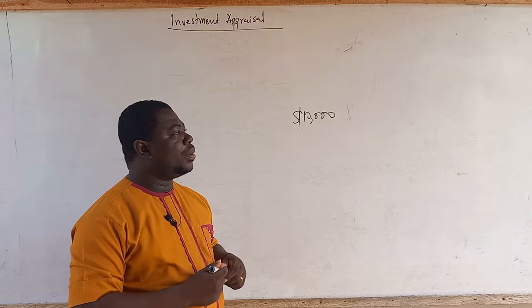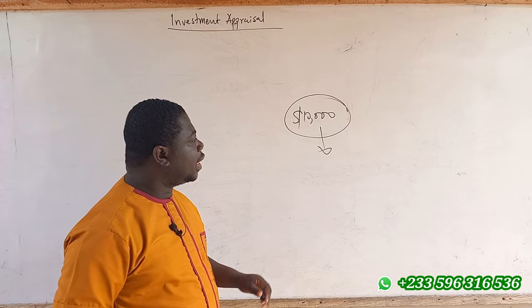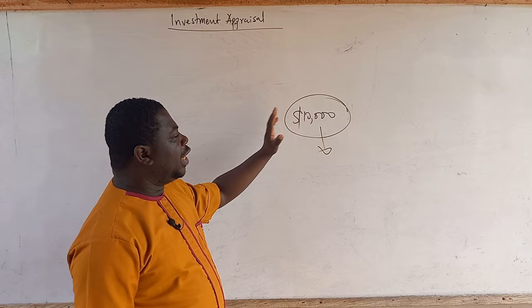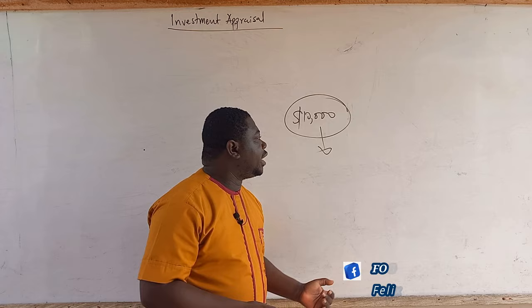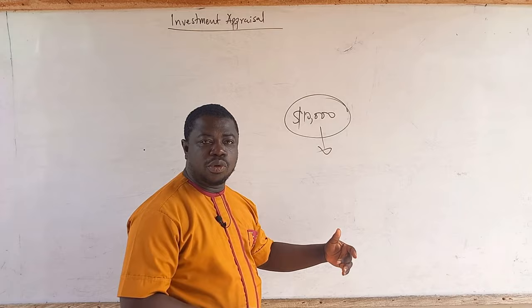If you want to put, let's say, an amount of $10,000 into a capital project — trying to build a machine to produce some sachet or bottled waters — that becomes a capital project you are planning to invest in. When you want to invest, you need to do what we call investment appraisal, looking at the expected cash flows in relation to the initial investment.